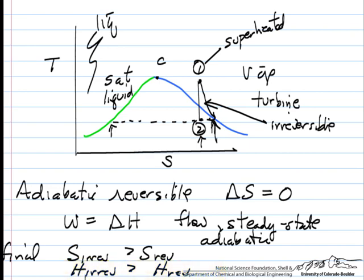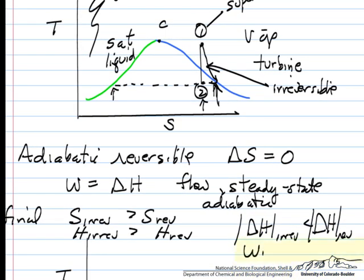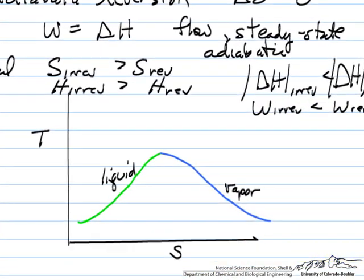The reason we can say that is just from looking at the diagram and knowing the enthalpy of the saturated steam at the same pressure, same temperature as a mixture of liquid and vapor, the enthalpy of the saturated steam is higher. And since the entropy is higher, the absolute value of delta H for the irreversible is less than the absolute value for the reversible. So the work for the irreversible is less than the work for the reversible.